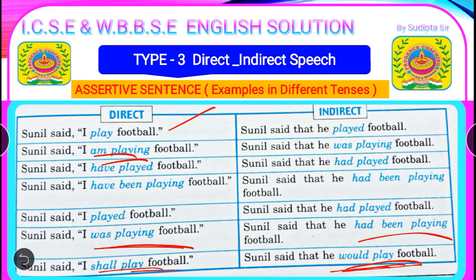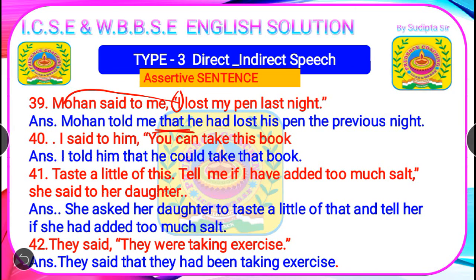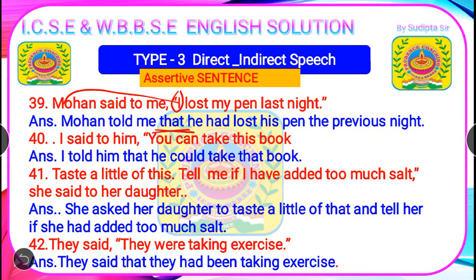Now some important question answers from assertive sentences. Question 39: 'Mohan said to me, I lost my pen last night.' There is a listener ('me'), so 'said to' → 'told': 'Mohan told me.' Linker 'that.' 'I' represents Mohan → 'he.' 'Lost' is past tense → past perfect: 'had lost.' 'His pen' (my → his). 'Last night' → 'the previous night.' Final answer: 'Mohan told me that he had lost his pen the previous night.'